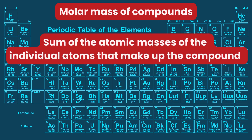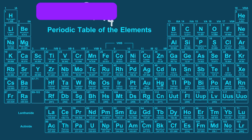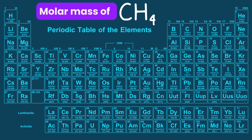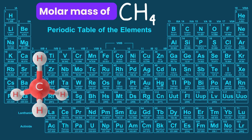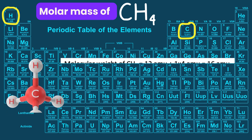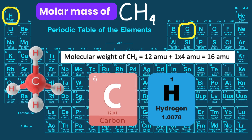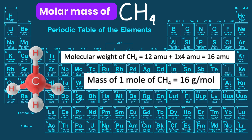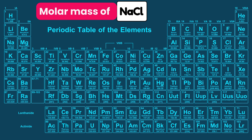Molar mass of compounds: the molar mass of a compound is the sum of the atomic masses of the individual atoms that make up the compound. Molar mass of CH₄ (methane): CH₄ is a molecular compound with covalent bonds. Its molecular weight is 12 amu plus 4 times 1 amu for four hydrogen atoms, which equals 16 amu. So the molar mass of methane equals 16 grams per mole.